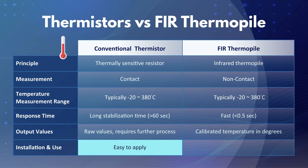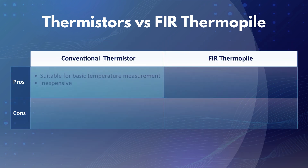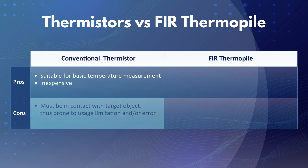Conventional thermistors are known for their simplicity, making them relatively easy to install and use in various applications. On the other hand, FIR thermopiles require more complex circuitry and calibration but are essential for high temperature and specialized environments. In summary, conventional thermistors are favored for their ease of development, making them suitable for basic temperature measurements at a lower cost.